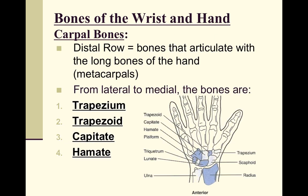The distal row of carpals contains four bones. Starting on the thumb side: the trapezium, which forms the saddle joint with the first metacarpal and is easy to remember because it goes with the thumb. Next to it is the trapezoid, a small bone. Then the capitate, a fairly large bone you can locate by starting at the middle finger and feeling down to the wrist.